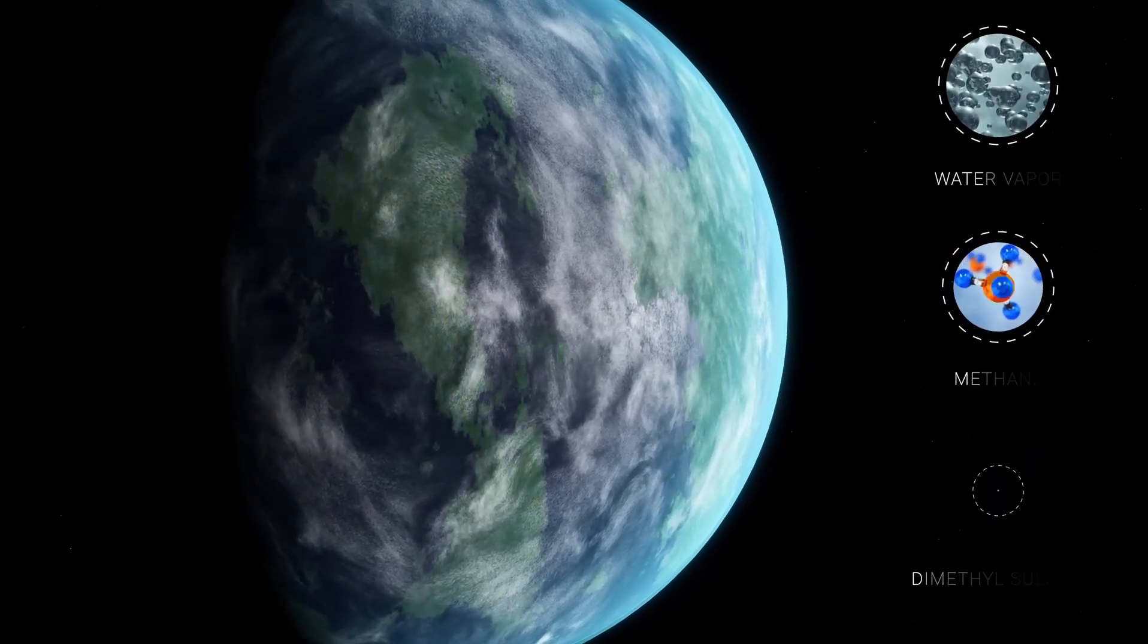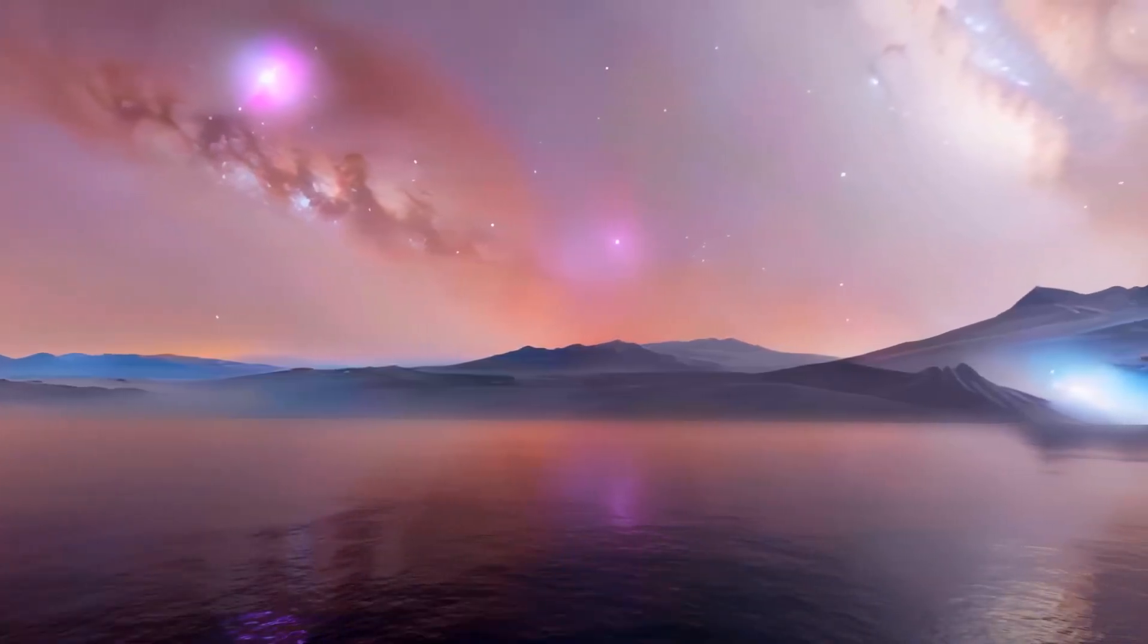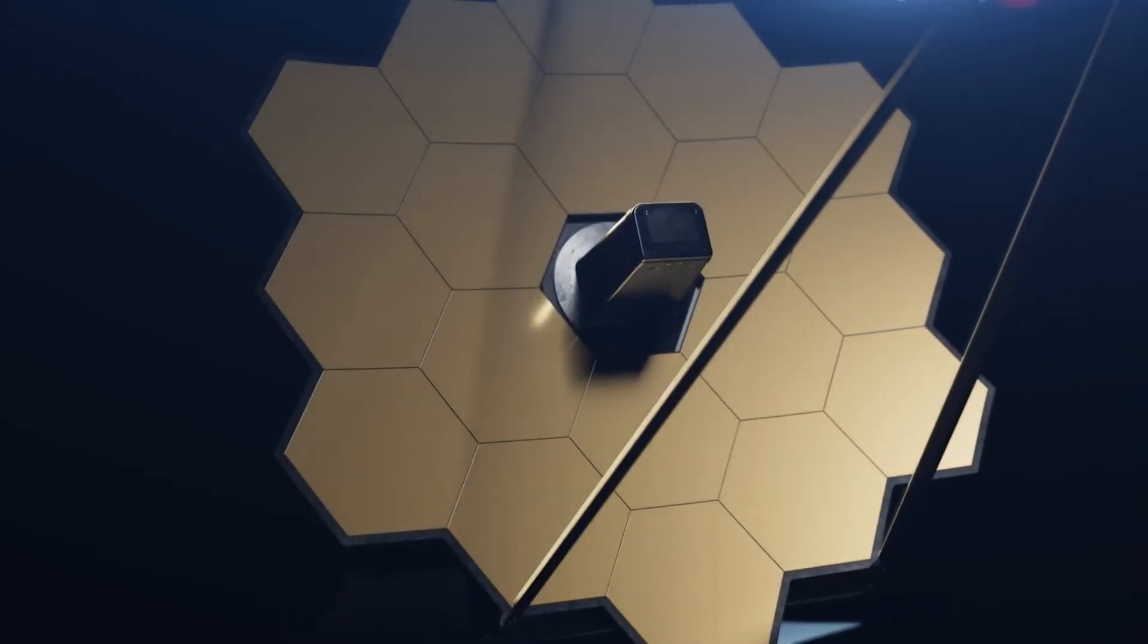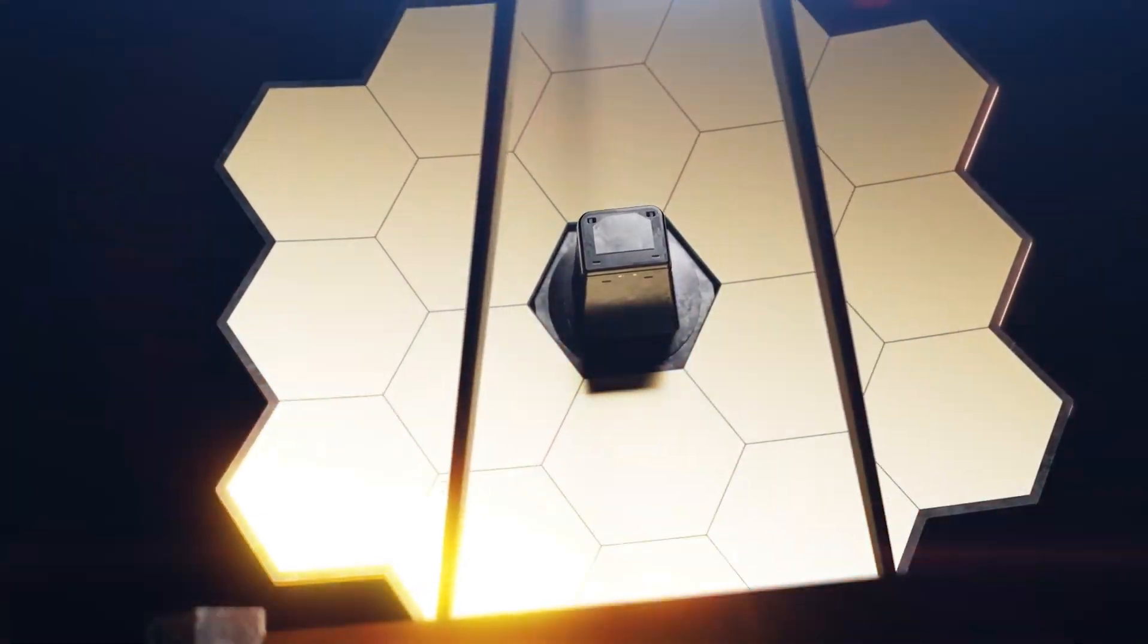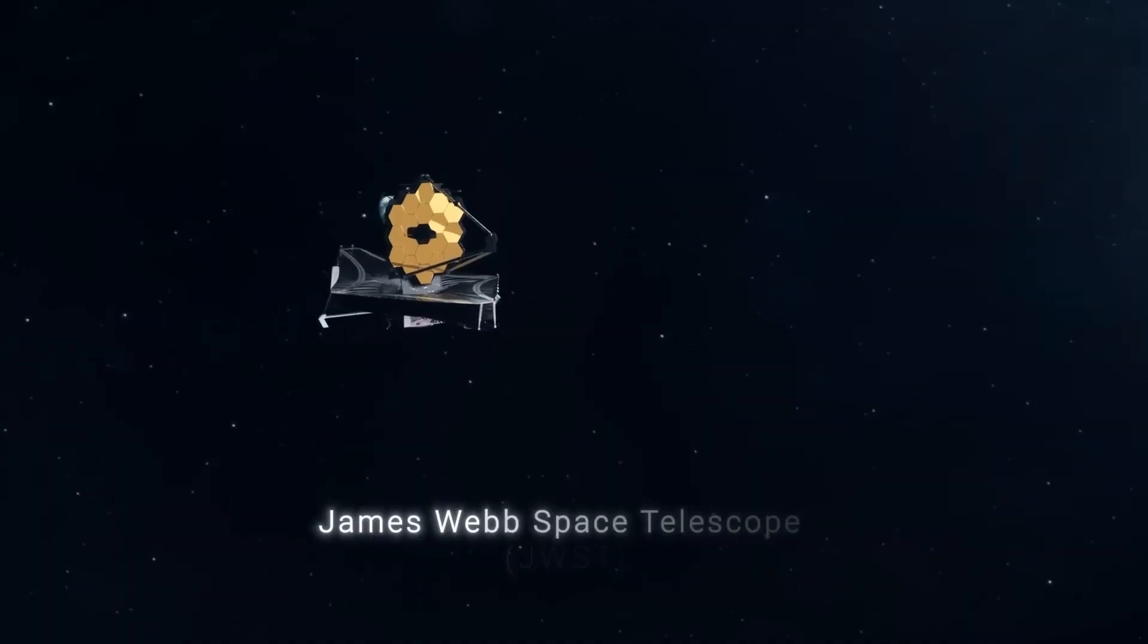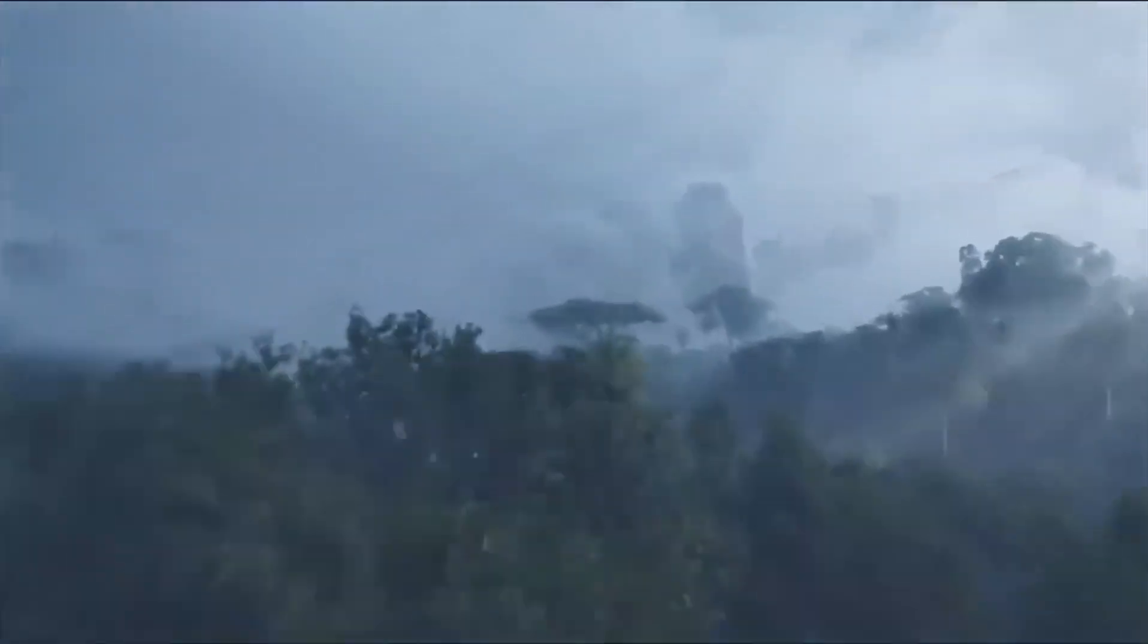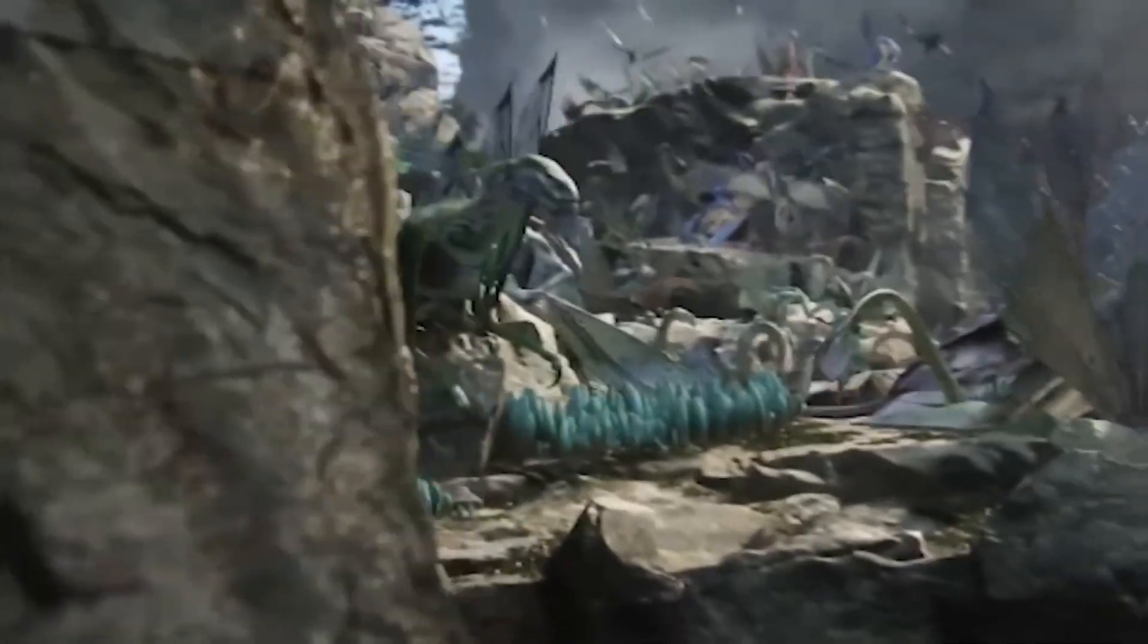One of the most innovative features of the JWST is its cooling technology. This is no ordinary sunshade, it's a multi-layered engineering genius the size of a tennis court that blocks the heat of the sun, earth, and moon. Why is this important? Because it allows the telescope to cool to incredibly low temperatures, increasing its sensitivity to the faint infrared signals emitted by distant celestial bodies.